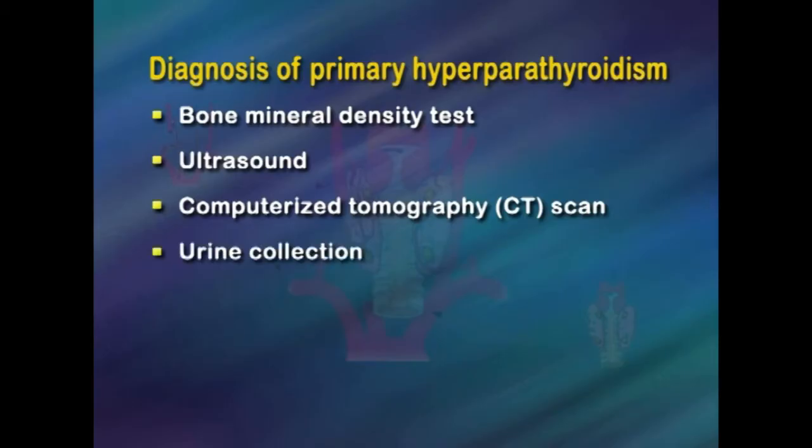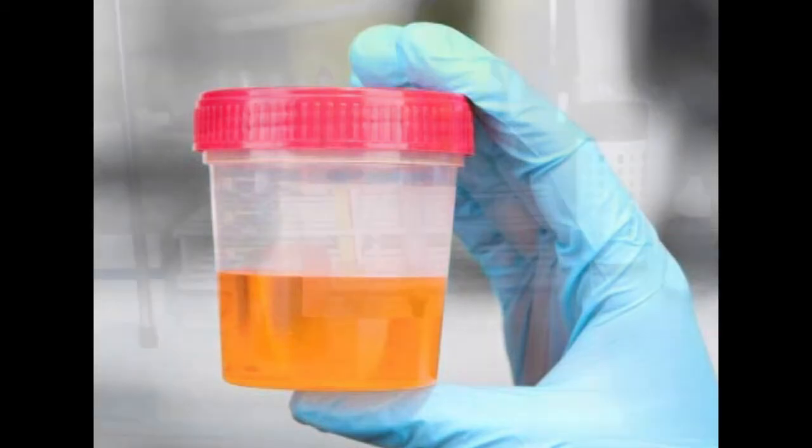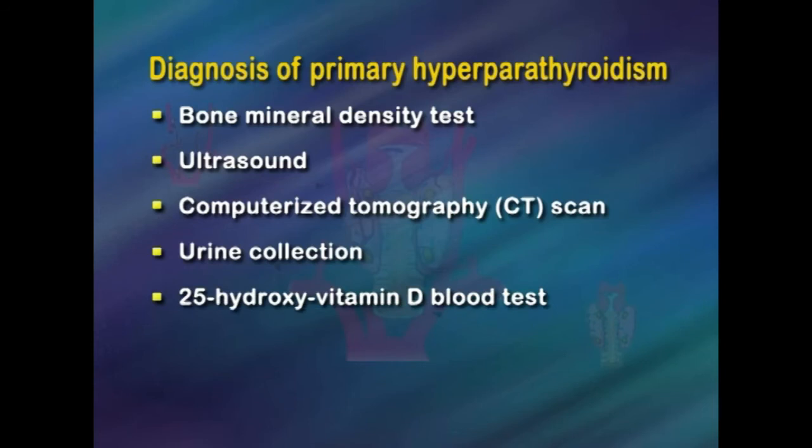Urine collection: a 24-hour urine collection may be done to measure selected chemicals such as calcium and creatinine, a waste product healthy kidneys remove. The person collects urine over a 24-hour period and the urine is sent to a laboratory for analysis. The urine collection may provide information on kidney damage, the risk of kidney stone formation, and the risk of familial hypocalciuric hypercalcemia. A 25-hydroxy vitamin D blood test is also recommended, as vitamin D deficiency is common in people with primary hyperparathyroidism.